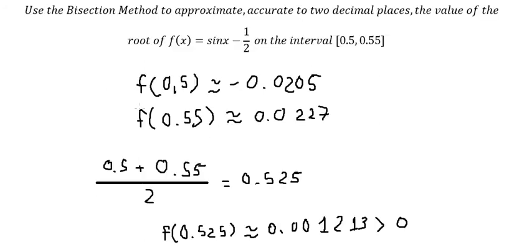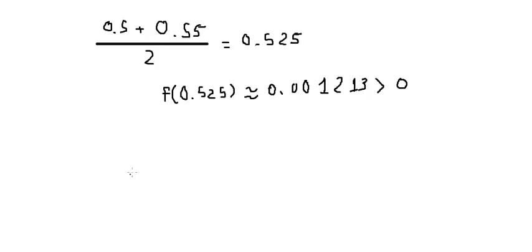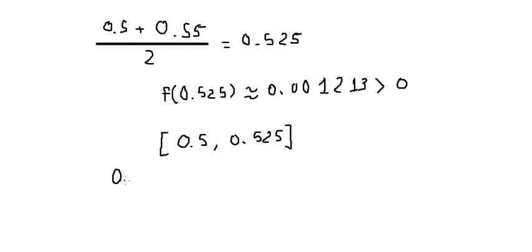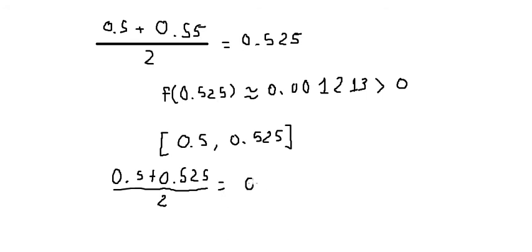Let's see the technique for the bisection method. The new interval is [0.5, 0.525]. We apply the same technique, taking the average: (0.5 + 0.525) divided by 2, giving us the midpoint 0.5125.